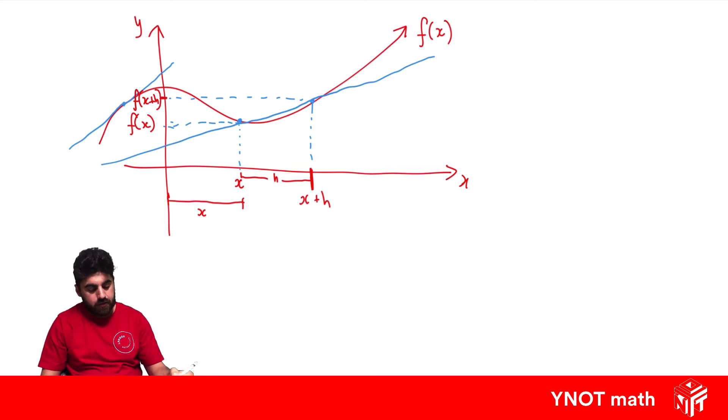Now, to get the gradient of a line given two points, we can use the formula m equals y2 minus y1 over x2 minus x1. So we're going to use this is y2, this is y1, and this is x2, and x is x1. So let's go ahead and sub those in.